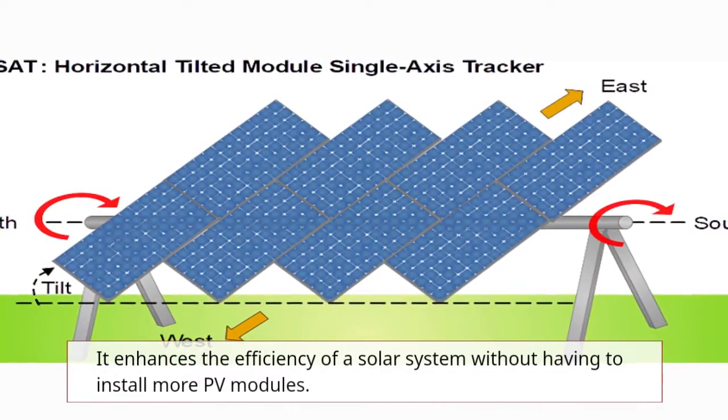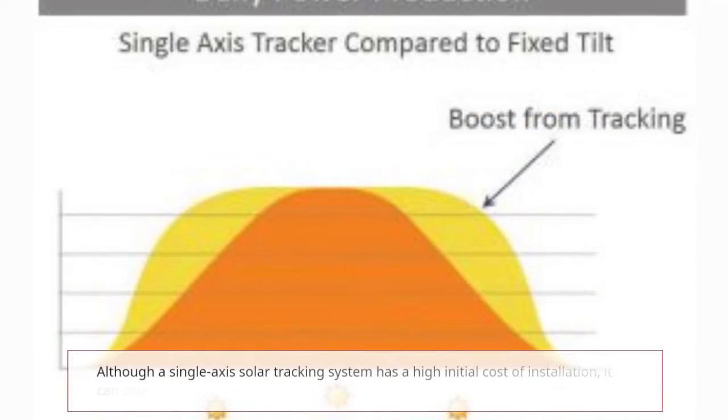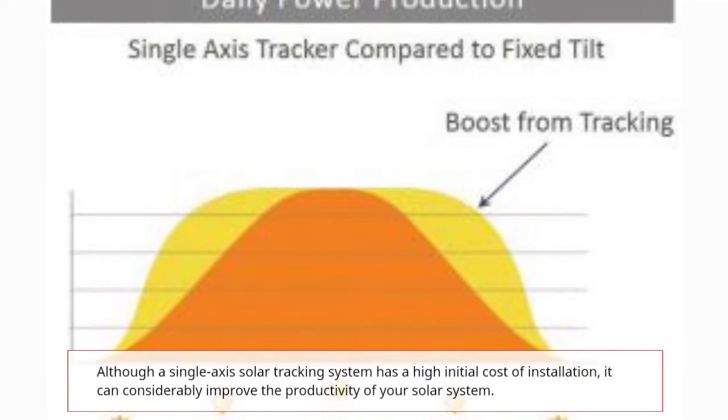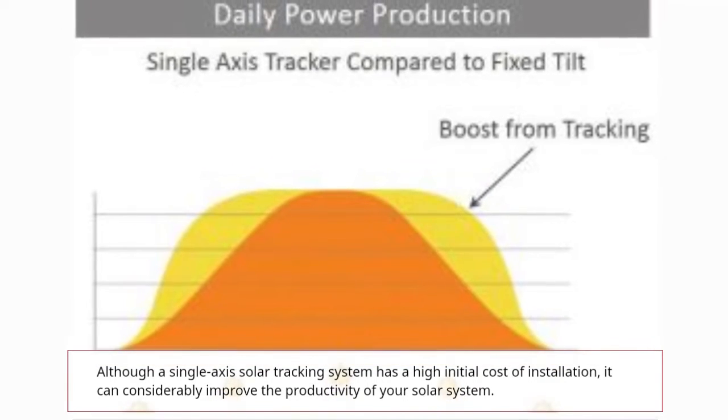It enhances the efficiency of a solar system without having to install more PV modules. Although a single axis solar tracking system has a high initial cost of installation, it can considerably improve the productivity of your solar system.